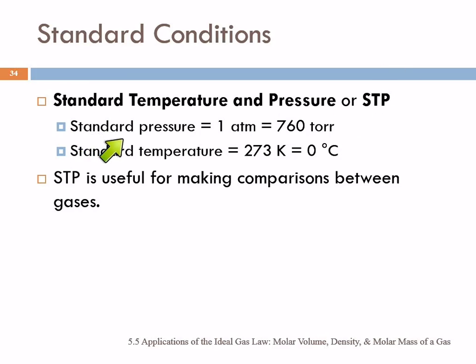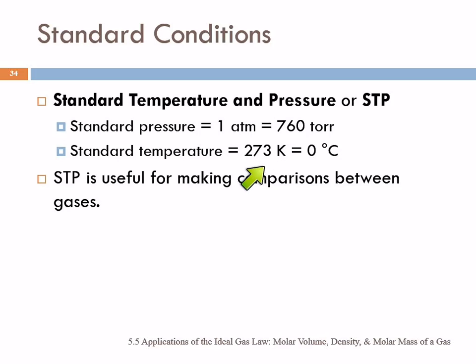Standard pressure is one atmosphere, which is equal to 760 torr. Standard temperature is 273 Kelvin, which is equal to zero degrees Celsius. You might ask why they picked that pressure and temperature — I think they picked it because it was convenient. If you're choosing something, you might as well be convenient about it.